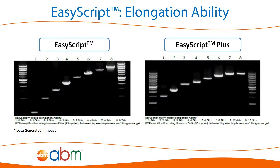The two reverse transcriptases also vary in their ability to synthesize cDNA. EasyScript is capable of creating cDNA targets up to 9 kilobases, whereas EasyScript Plus has an upper limit of 15 kilobases.